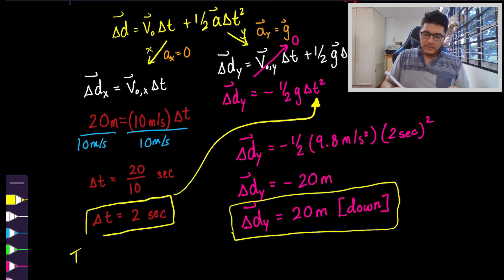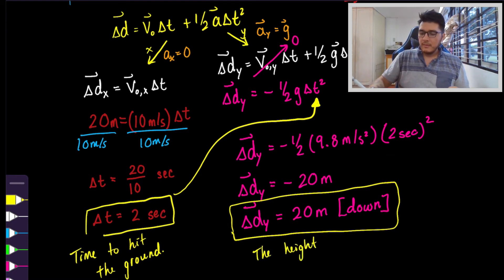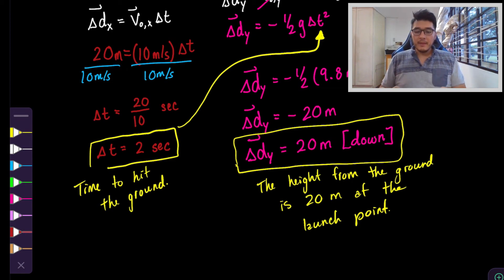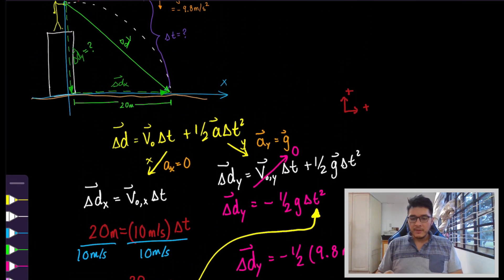So time to hit the ground: it's two seconds, and the height from the ground is 20 meters at the launch point.